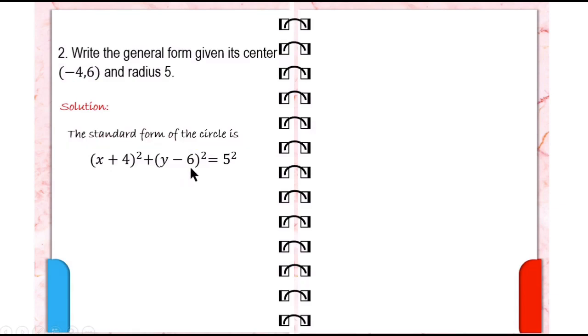Substitute the radius, which is 5. So 5 squared is 25. And so we now have the standard form of the circle.